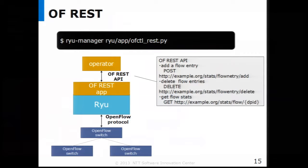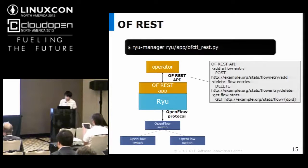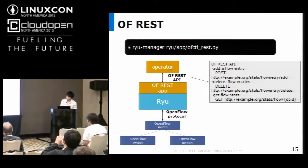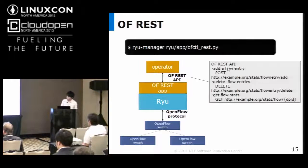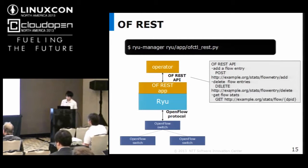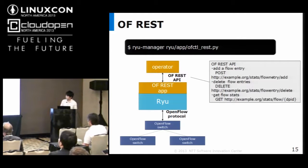Next is the OpenFlow REST application. OpenFlow REST provides an OpenFlow interface to the network operator. There is part of the OpenFlow REST API — you can add a flow entry with this API and get started without implementing SDN applications. This application would help your debugging, testing, and trying OpenFlow. This application is for SDN beginners.